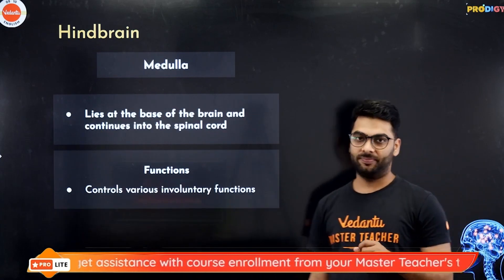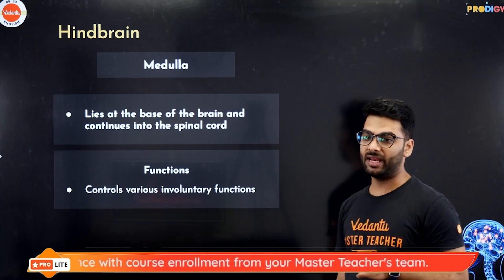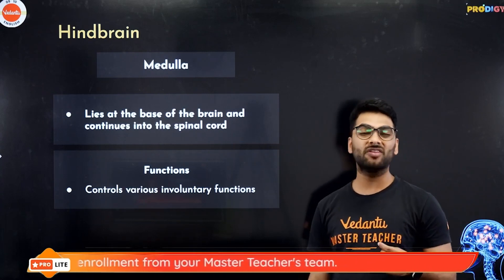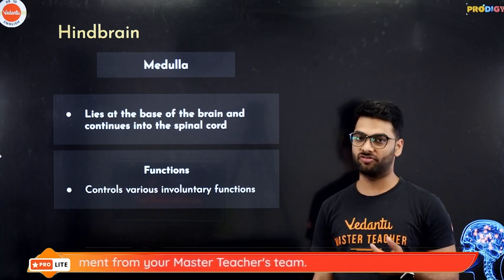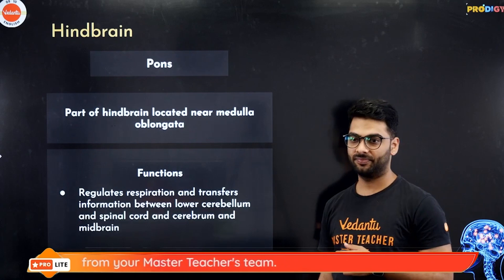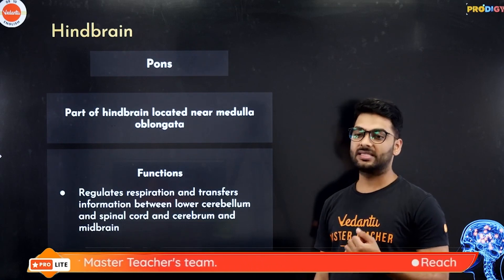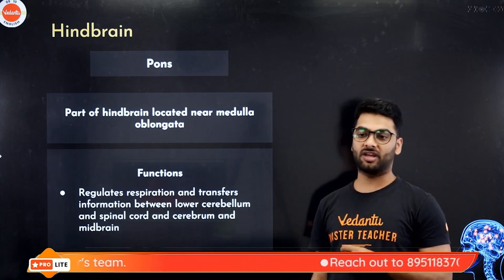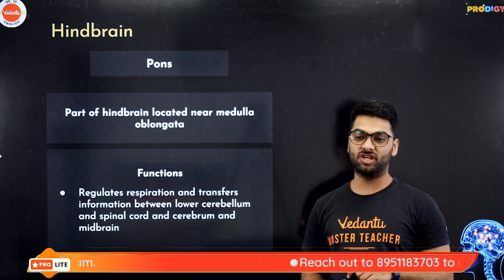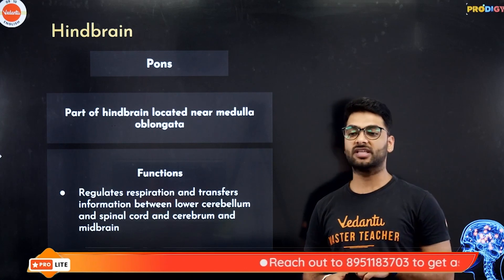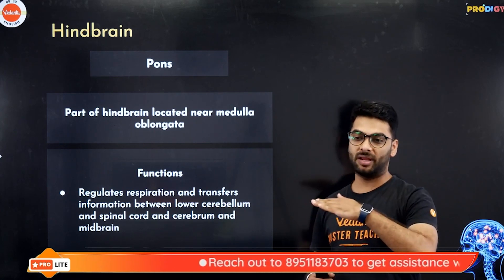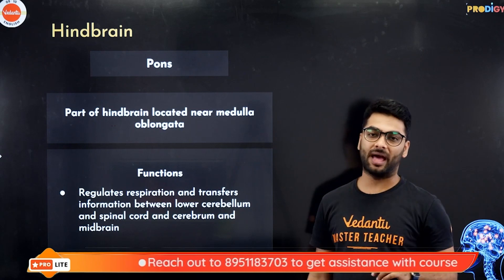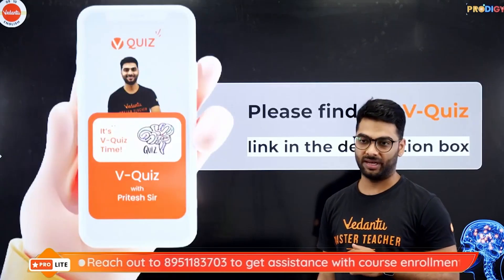The medulla is at the base of the brain and continues into the spinal cord. It controls involuntary actions of the body. The pons is a part of the hindbrain located near the medulla. It regulates respiration and transfers information between the cerebellum, spinal cord, cerebrum and the midbrain.